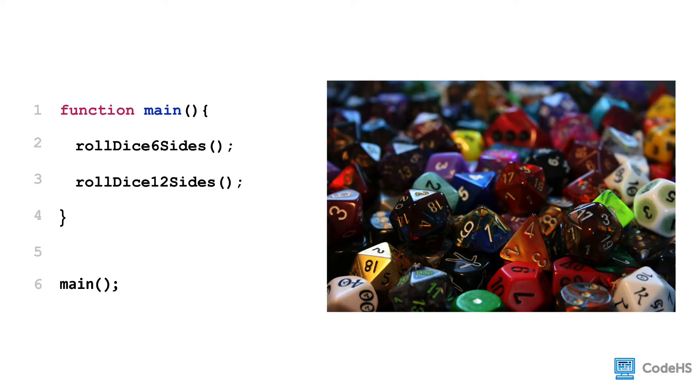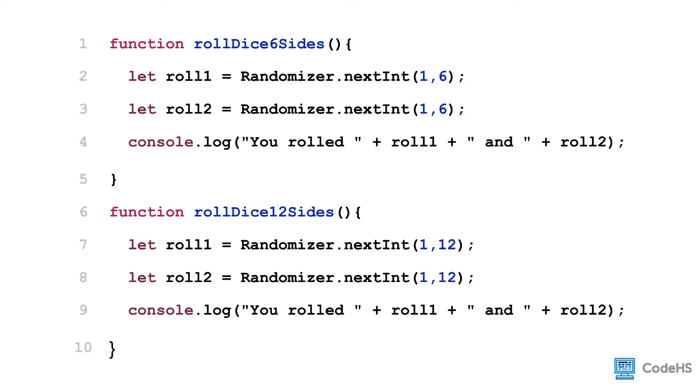But what if we wanted to roll dice with sides other than six? What if we wanted to roll, say, two 12-sided dice? We could create a function for each dice, a rollDice six sides function and a rollDice 12 sides function.